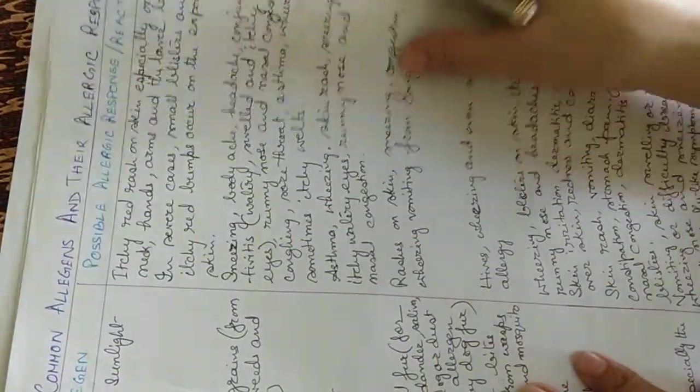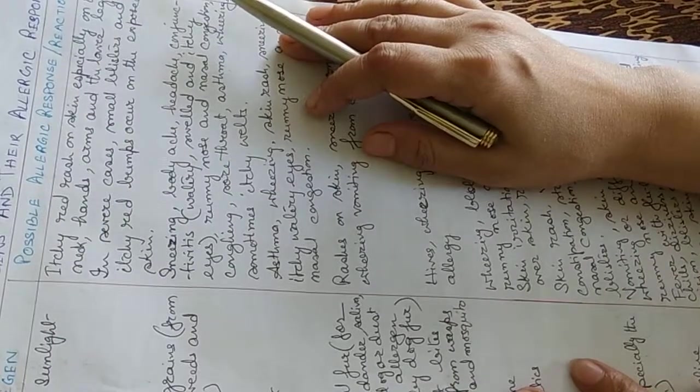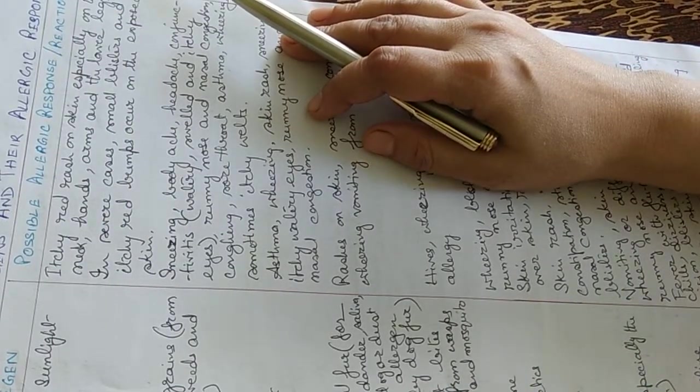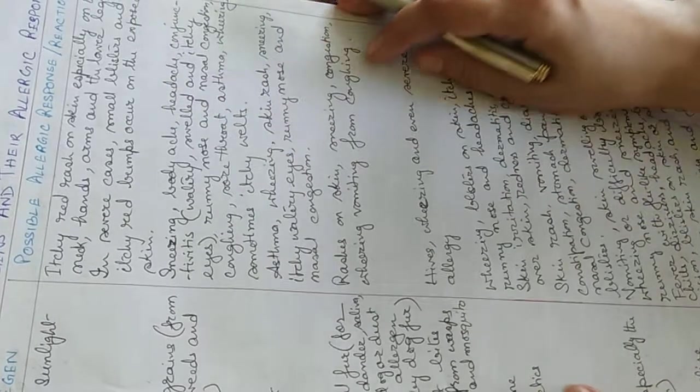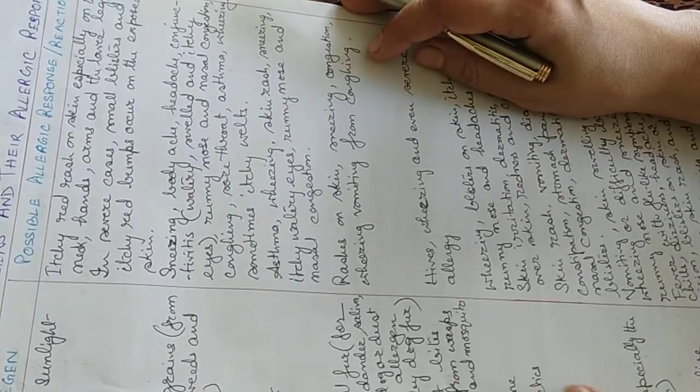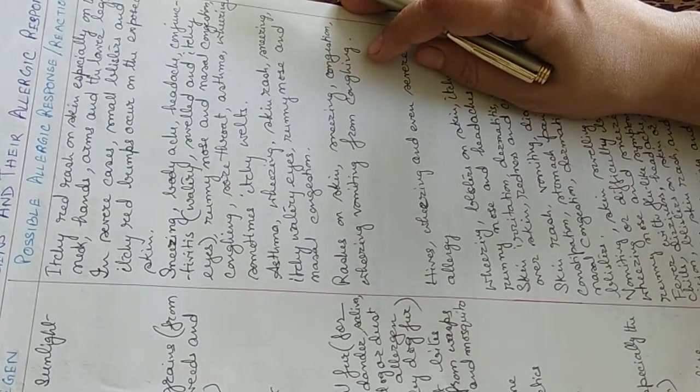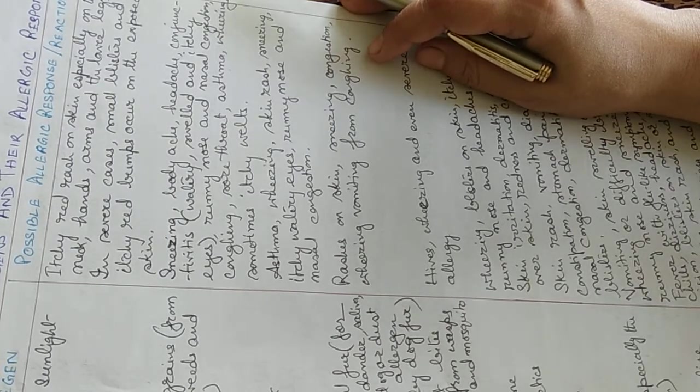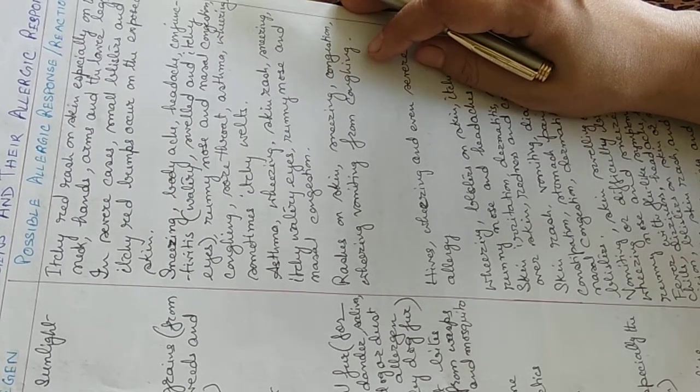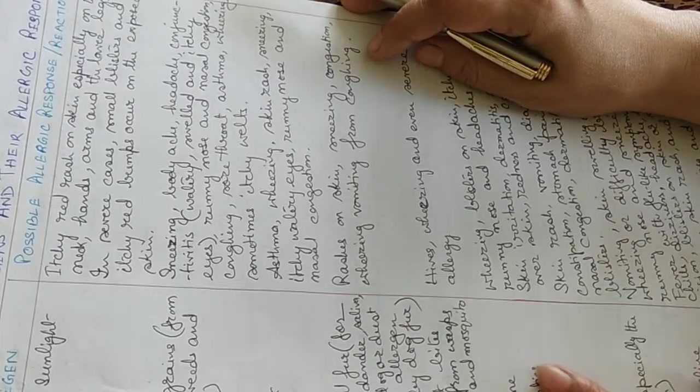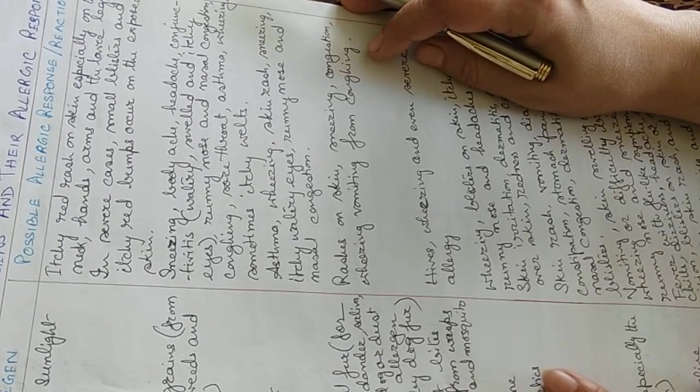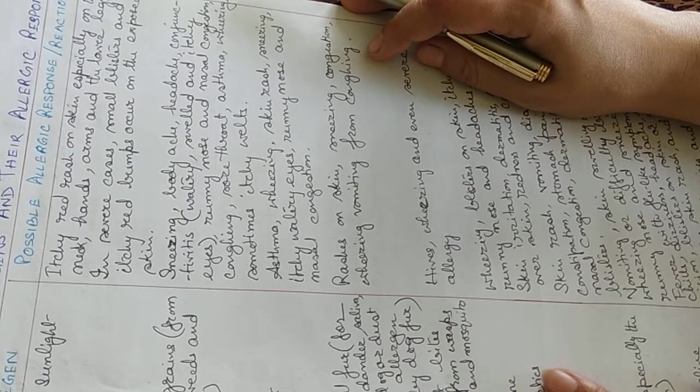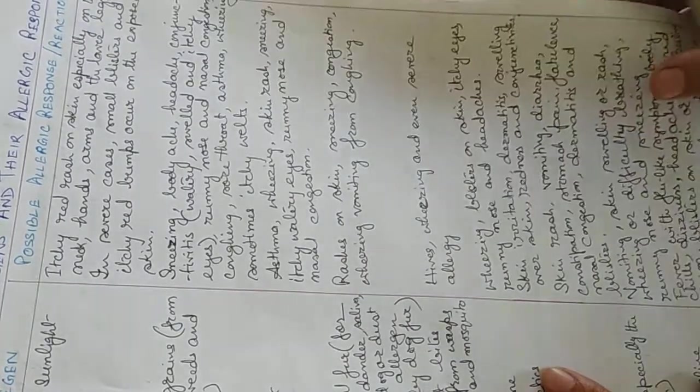Pollen grains released from grass, weeds and flowers cause sneezing, body ache, headache, conjunctivitis. It's a disease of the eye where there is water and swelling, watery eyes, itchiness. Then running nose, nasal congestion, coughing, sore throat, asthma, wheezing, sometimes itchy welts.